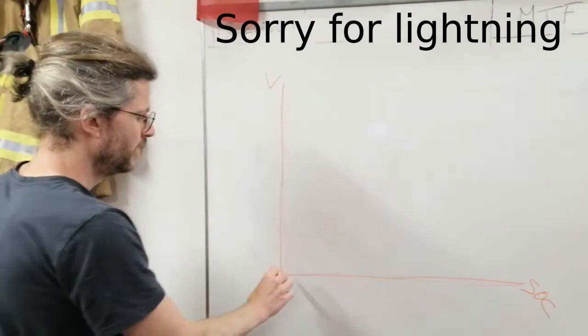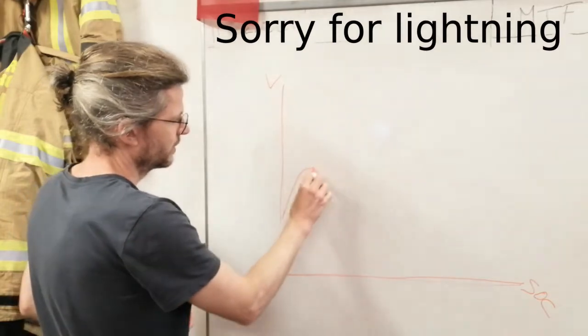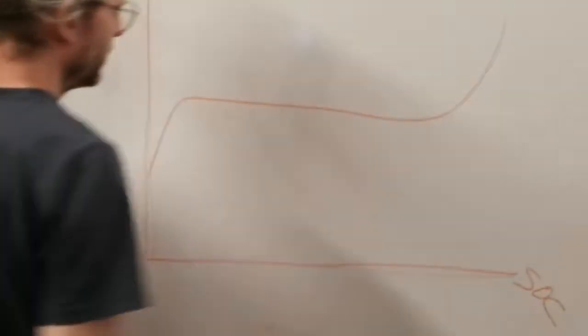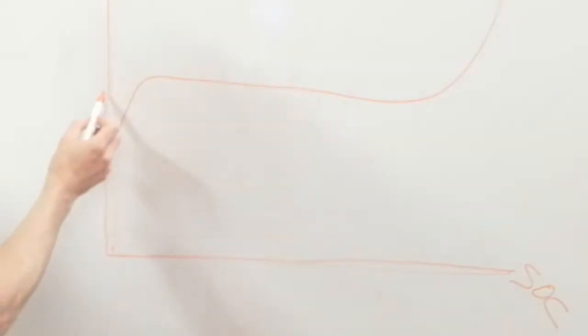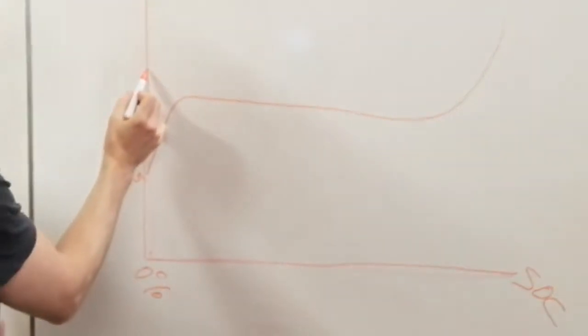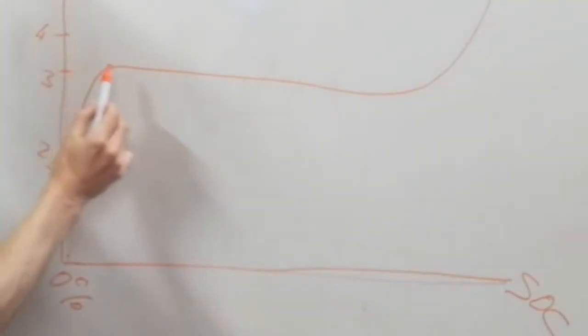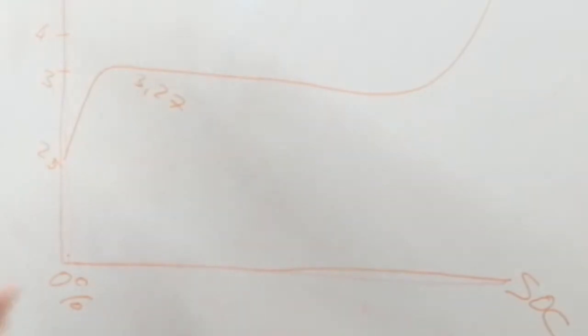Usually the curve looks something like that and then it goes up. Here we are around, that's empty, so we are at 0%, that's usually 2.5 volts. And here we are around 3 point somewhere, here it's 3 and maybe here it's 4. Something like that.